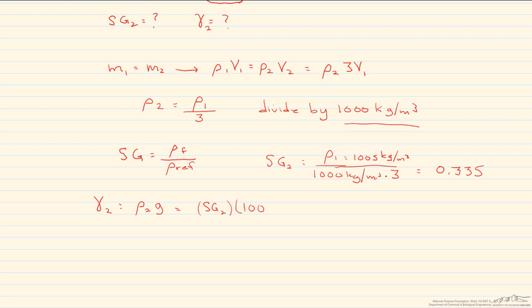You take the specific gravity now and multiply it by the reference density, one thousand kilograms per meter cubed, and we multiply this by gravity, which is 9.8 meters per second squared. And we just put in the number that we found for our specific gravity, and multiply this out.